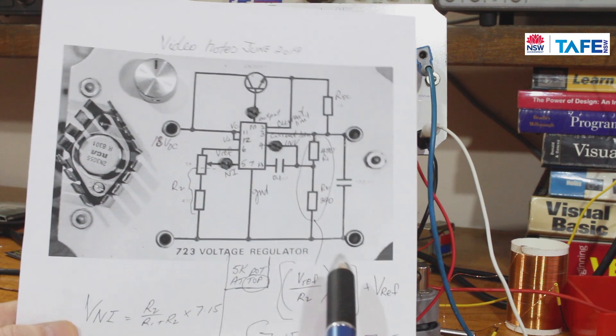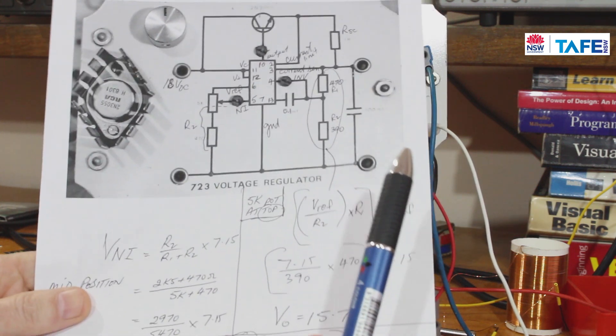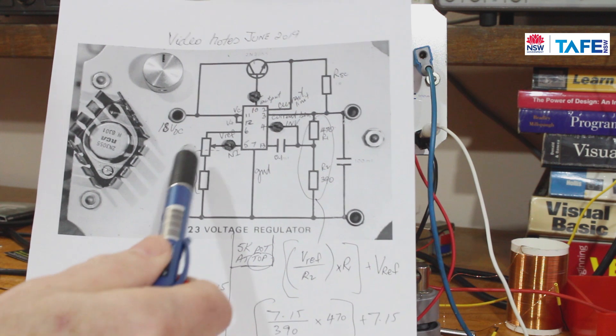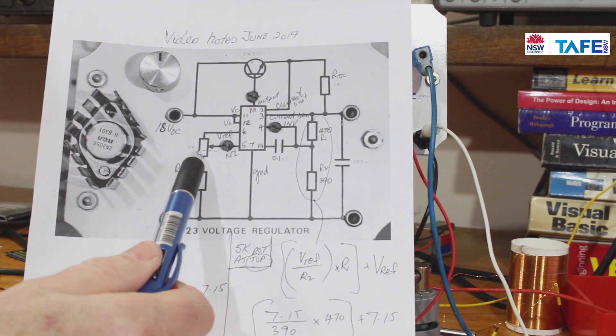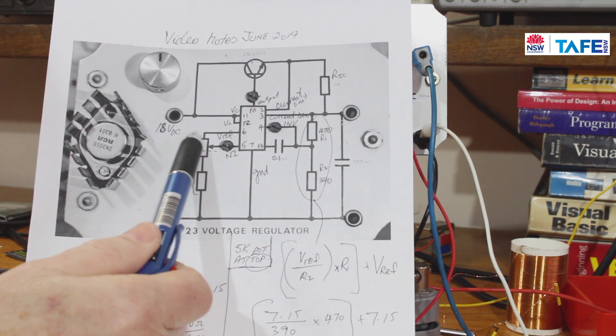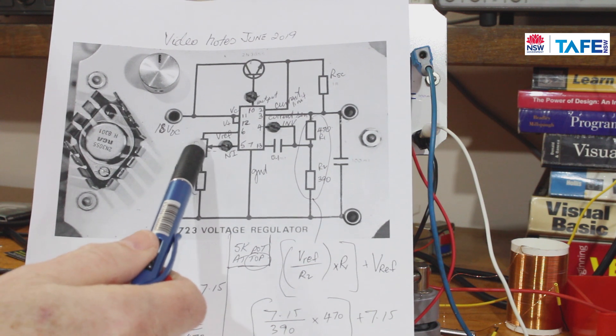Now before we go too far, let's have a look at the maths. First thing, if this resistor, the wiper, is right up at the very top, well I can pretty well say I've got 5470 ohms.